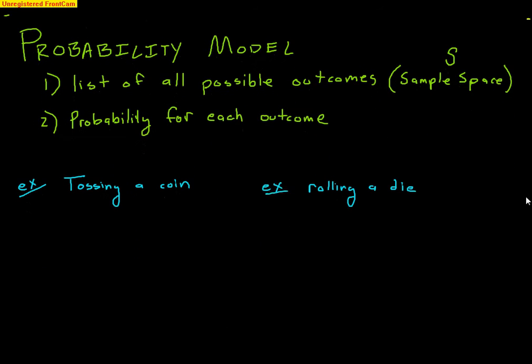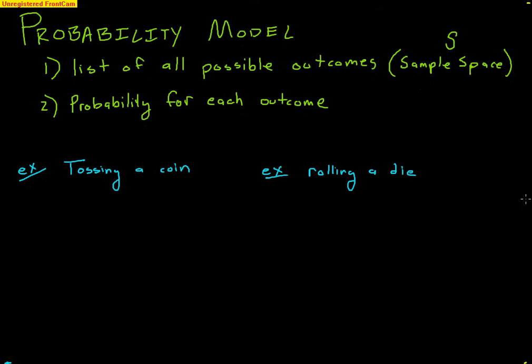So what is a probability model? A probability model is very easy. It only involves two steps. First, make a list of all possible outcomes. We call this our sample space. The sample space is literally nothing more than a list of everything that could happen in your chance process. And the second thing you need is the probability for each one of those outcomes.